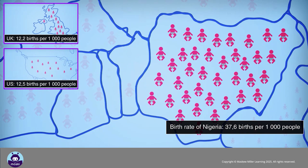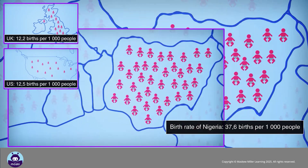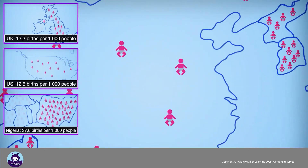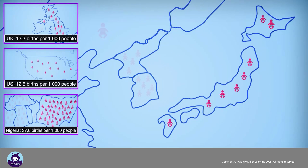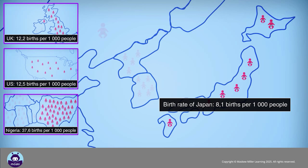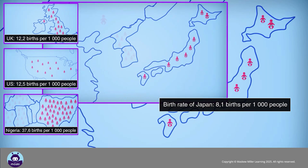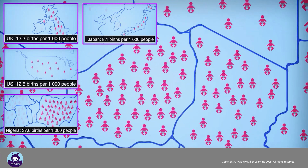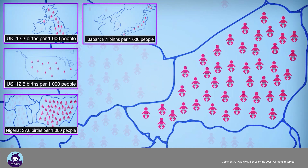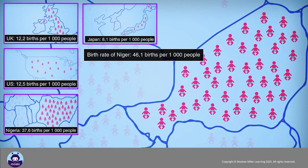In 2014, the country with the lowest birth rate was Japan, with a birth rate of 8.1 births per 1,000 people. The country with the highest birth rate was Niger, with a rate of 46.1 births per 1,000 people.